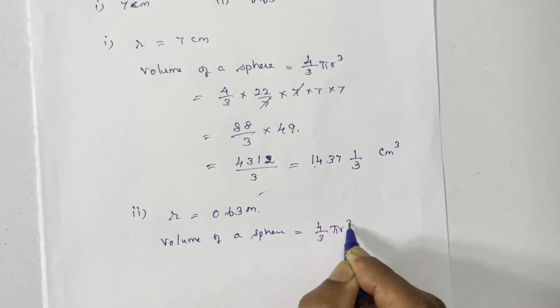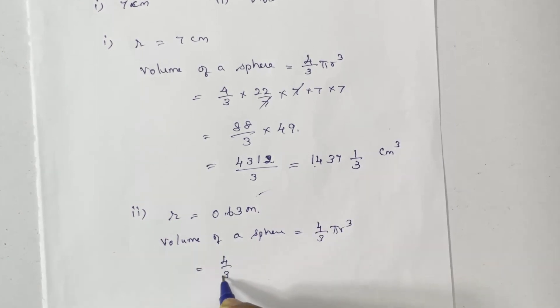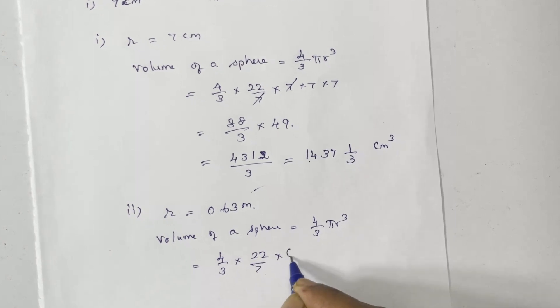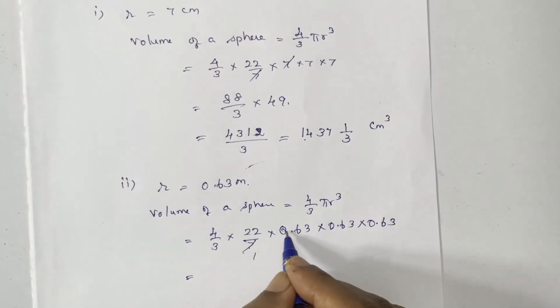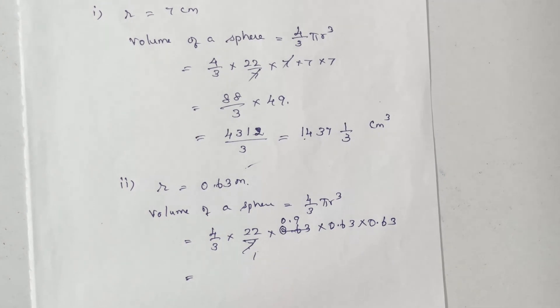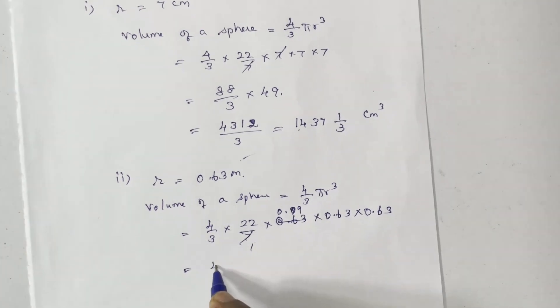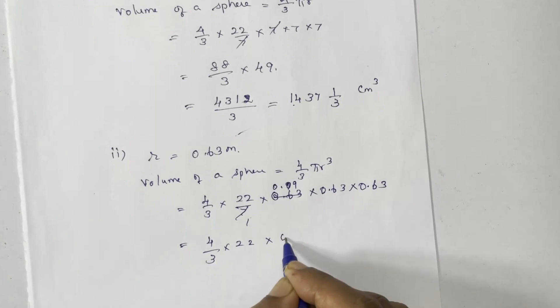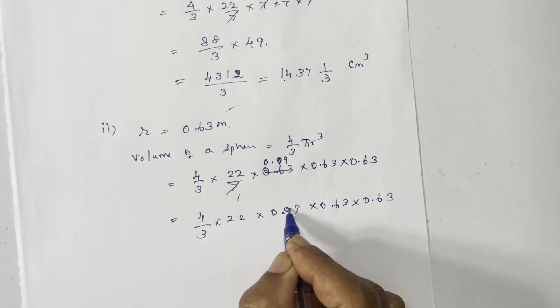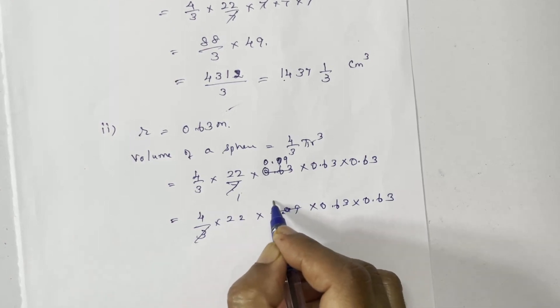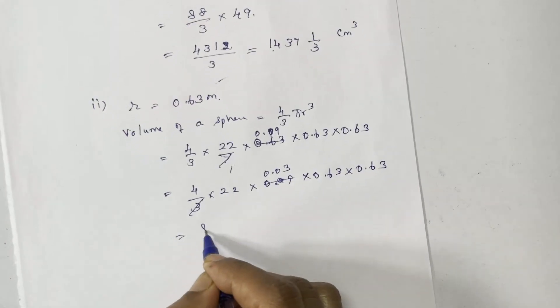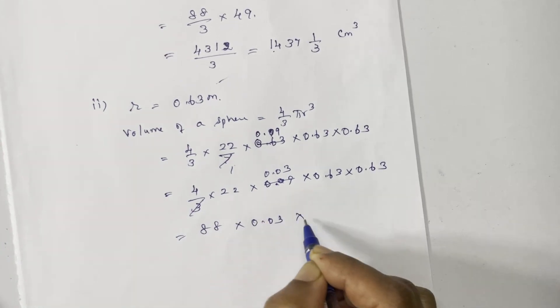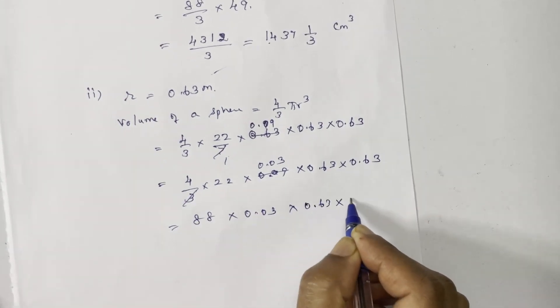Radius 0.63 m. So volume of a sphere, calculate. 4 by 3 pi r cube. 4 by 3 into 22 by 7, r cube is 0.63 cube. 7 into 9 is 0.09. So 4 by 3 into 22 into 0.09 into 0.63 into 0.63. Cancel, third table. So here is 88 into 0.03 into 0.63 into 0.63.